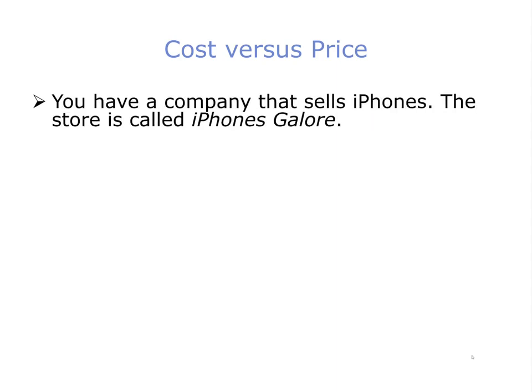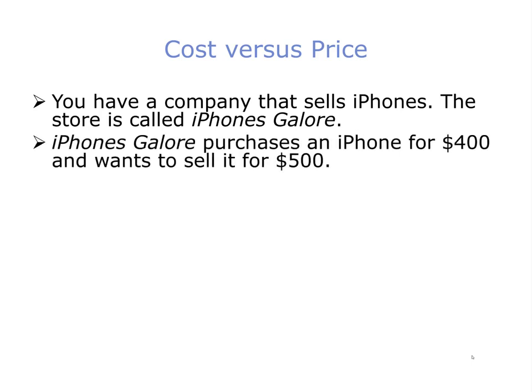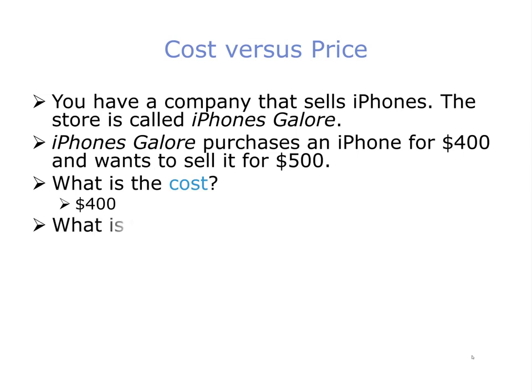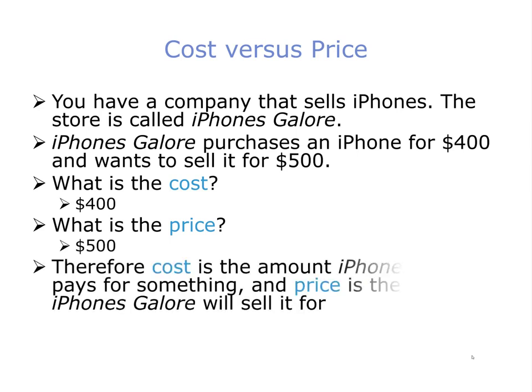Let's say you have a company that sells iPhones. The store is called iPhones Galore. iPhones Galore purchases an iPhone for $400 and wants to sell it for $500. So the first question is, what is the cost? The cost is $400. The next question is, what is the price? The price is $500. It's critical to understand that cost is the amount iPhones Galore pays for something, and price is the amount iPhones Galore will sell it for.